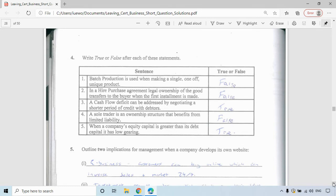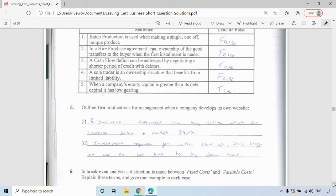Two implications for management when a company develops its own website. You can switch to an e-business, which is online. Customers can buy online. This can increase sales and market exposure 24-7. Your website is active 24-7, not just store hours. Investment required for initial startup. This could be costly. You may have to train staff on use. You may have to buy a domain name to register your website. You may have to spend a lot of money on a number of areas in the business. There's one benefit there straight away, and there's one challenge.